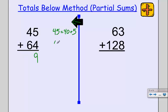I've got to know that 64 is made up of 60 plus 4. So I've already added my ones. Now I'm going to add my tens. 40 plus 60 is 100, so I list the total below.